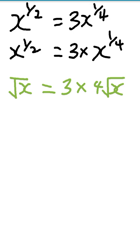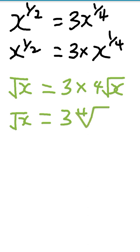The next thing we are going to do is square both sides. But before we square both sides, let's rewrite this as the square root of x is equal to 3 times the fourth root of x, because that 3 is multiplying it. Now we are going to square both sides to get rid of the square root on the left-hand side.